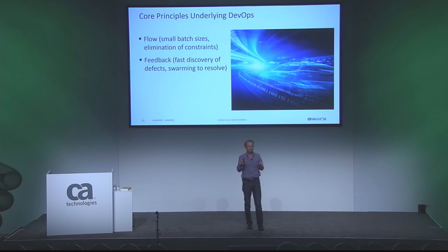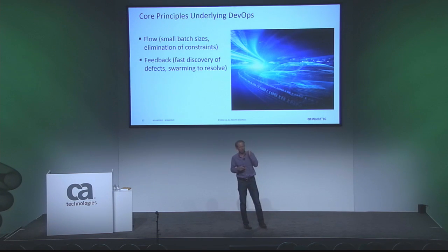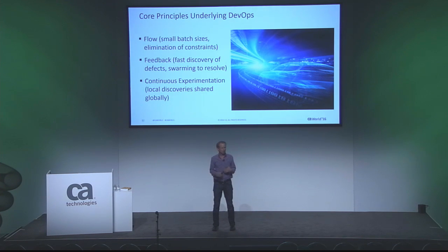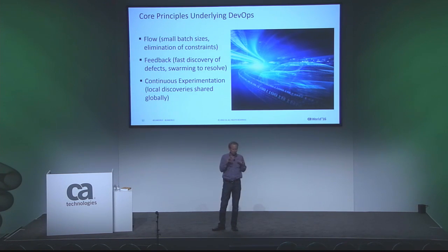The second key concept is feedback — getting feedback quickly from end users, or finding defects earlier in the development cycle, and swarming them immediately. Your goal is not a big backlog of bugs; the moment something is wrong, you squash it. The third is continuous experimentation — an environment where it's safe to try things, and when a small team learns something, that knowledge spreads globally throughout the organization.